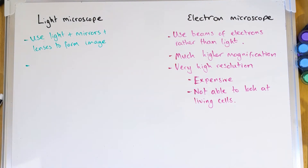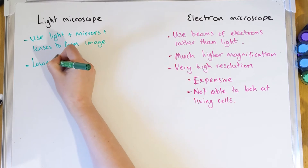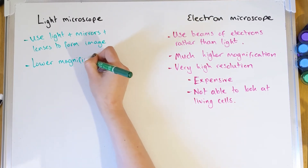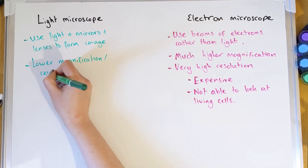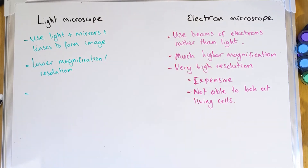Light microscopes, by contrast, have lower magnification and lower resolution, but they are much cheaper, more accessible, and easier to use.